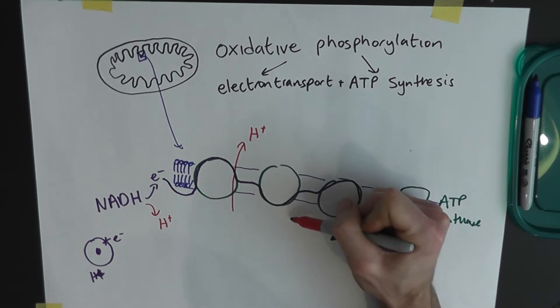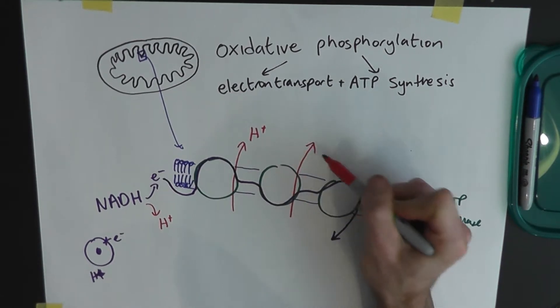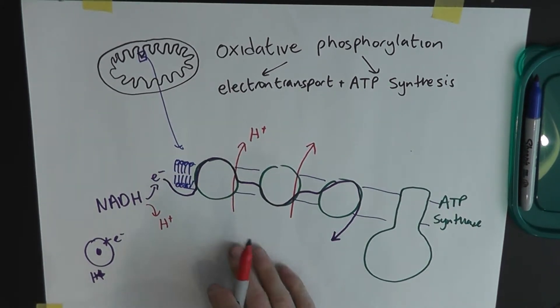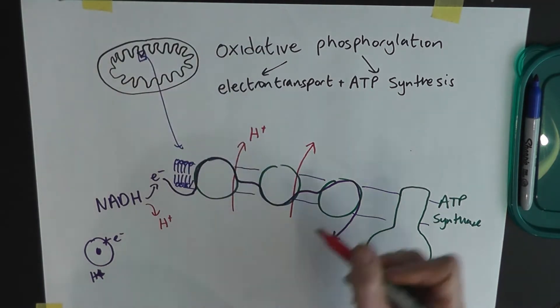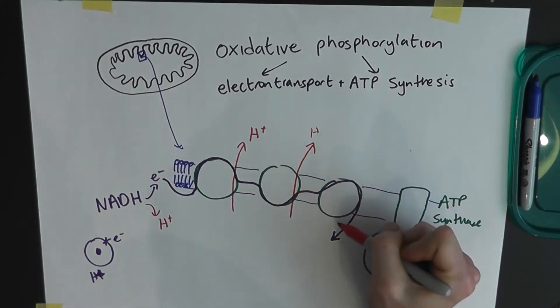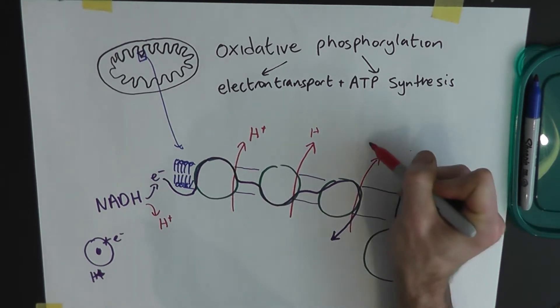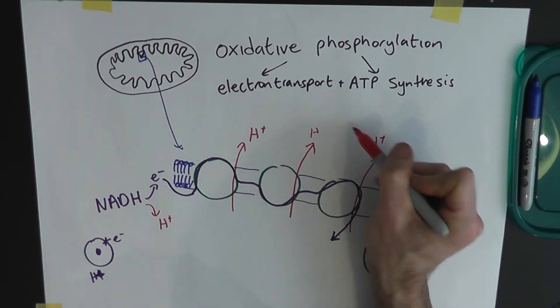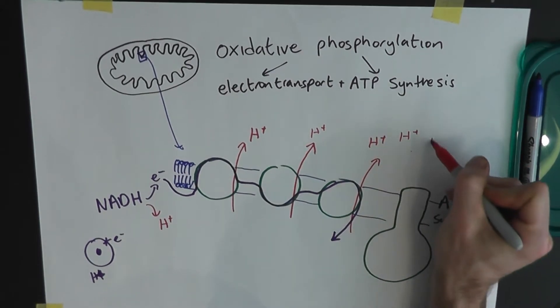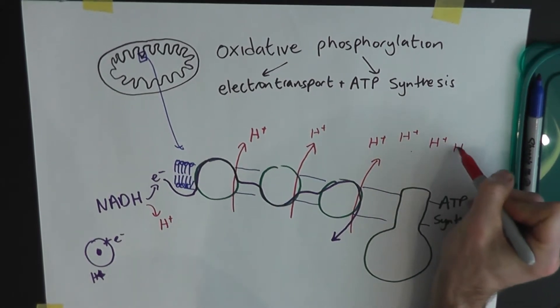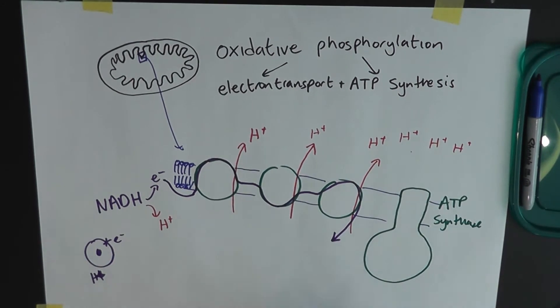And the hydrogen ions are transported from the matrix, which is where the Krebs cycle happens and most of the NADH is made to the inner membrane space of the mitochondrion. So you've got quite a lot of hydrogen ions just being pumped across this membrane. And they build up in the inner membrane space. They've got to get back somehow.